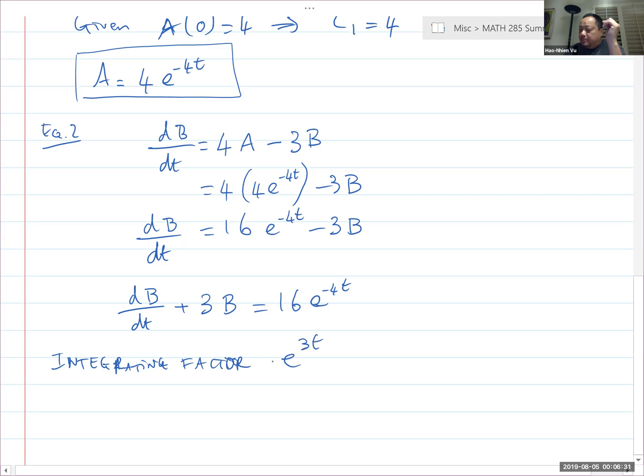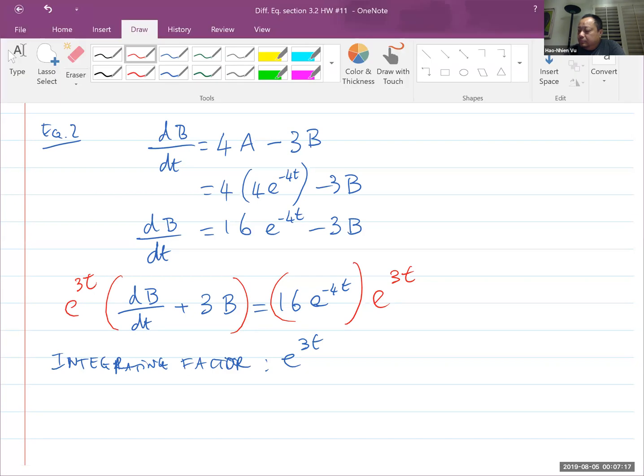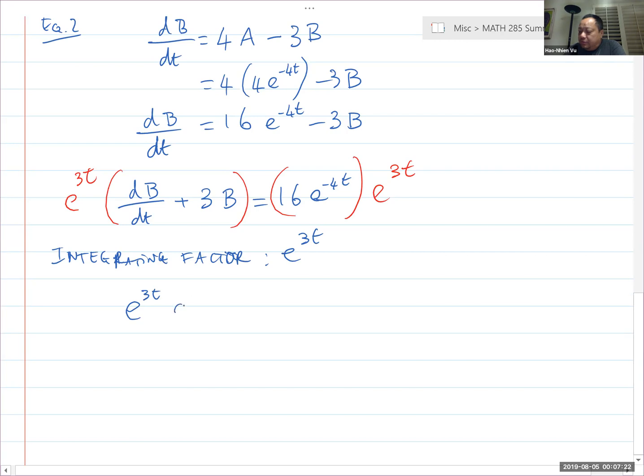Integrating factor is e^(3t), e to the integral of this. That's the formula, or if you think in terms of how do I fit this into the scheme of a product rule, then I need this three in the exponents so that when I take the derivative of it, I have this three here. So yeah, you can either memorize the formula or you can think of it in terms of turning the left hand side into the product rule. Either way I'm multiplying both sides by e^(3t). Then I end up with e^(3t) times dB/dt plus 3e^(3t)B is equal to 16e^(-t).